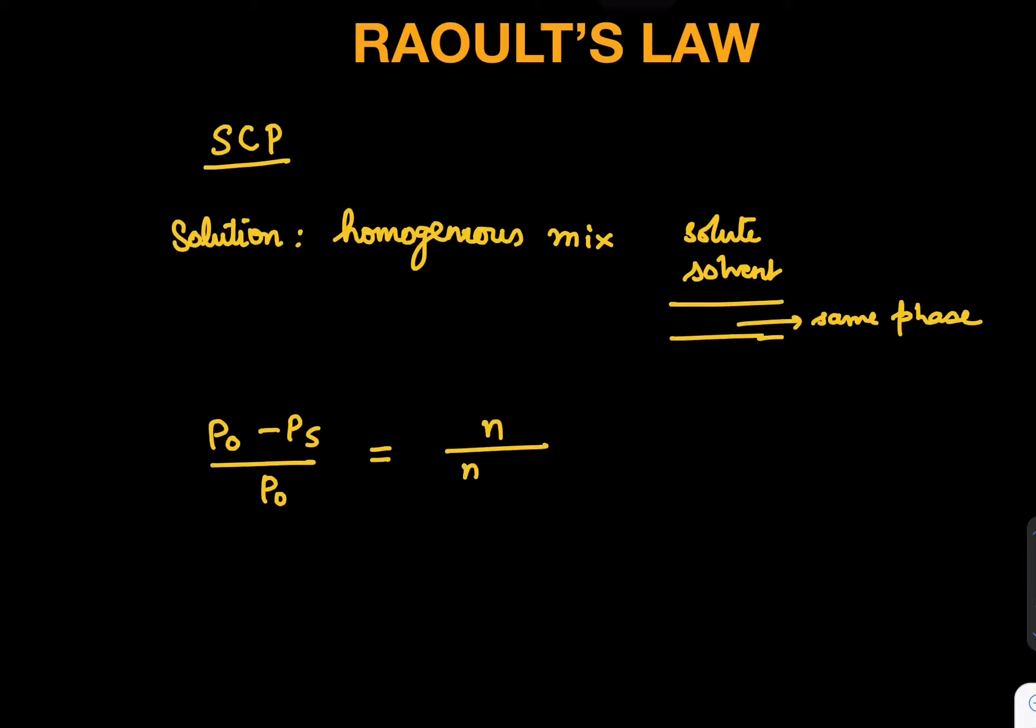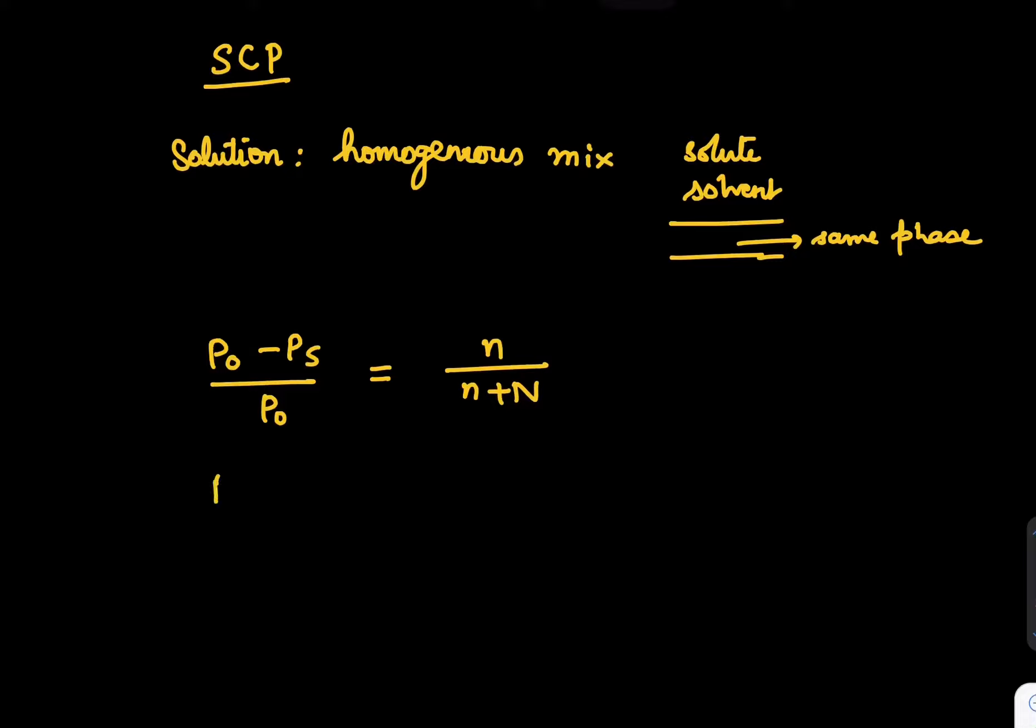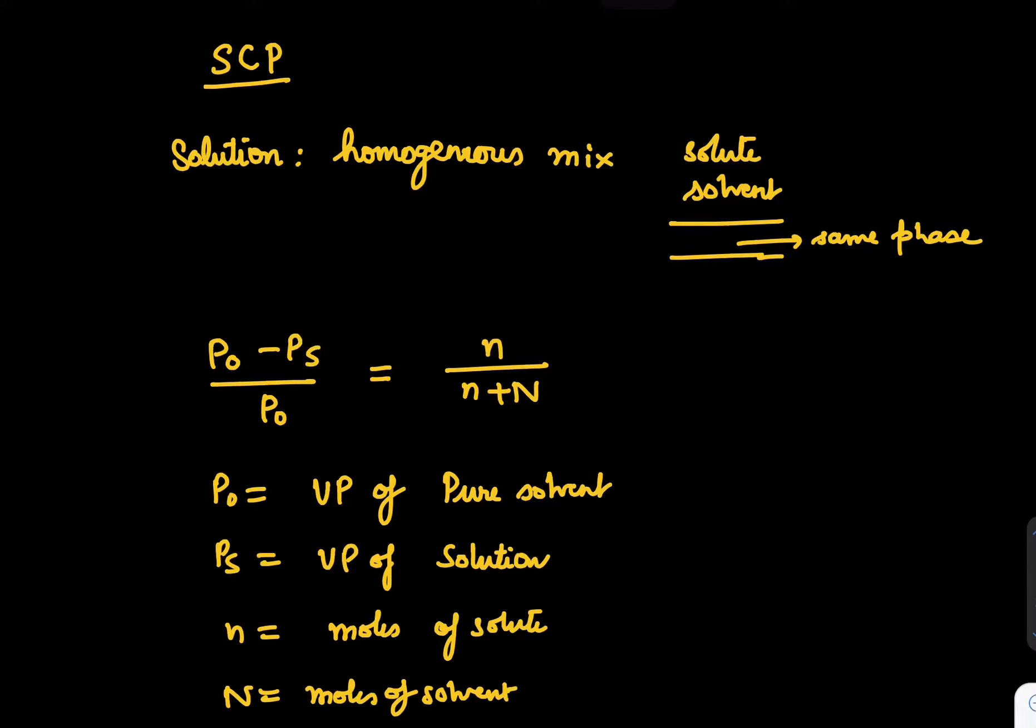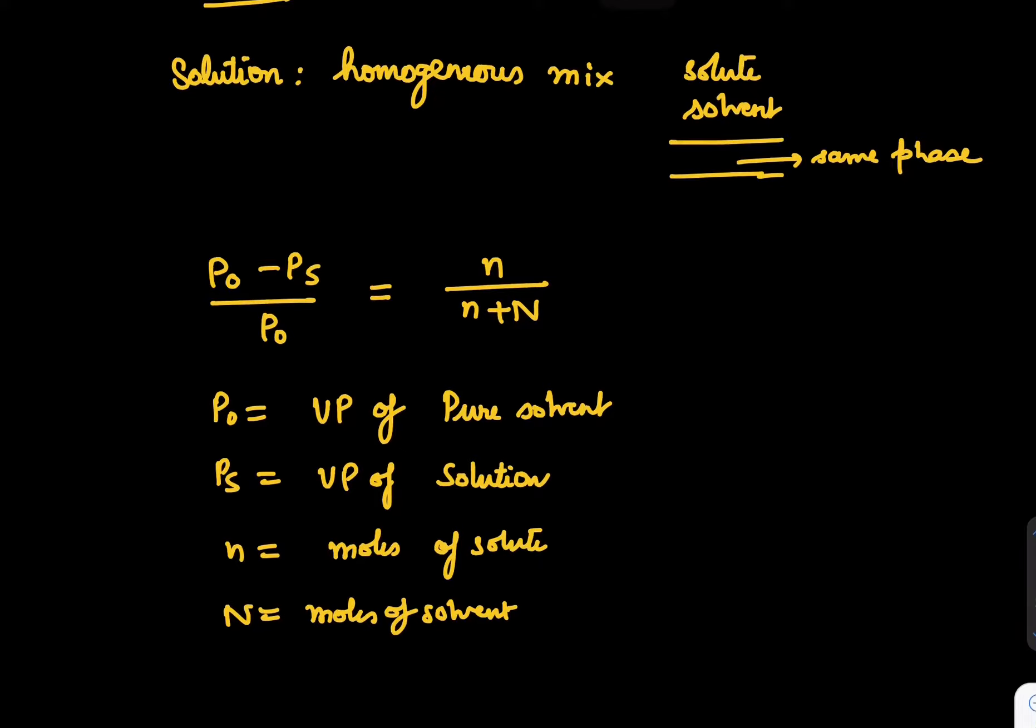I'll explain what is meaning of it. You can write down P naught is vapor pressure of pure solvent when it is in pure form, PS is vapor pressure of solution, small n is moles of solute, and capital N is moles of solvent.